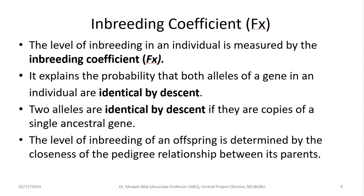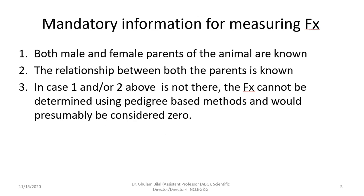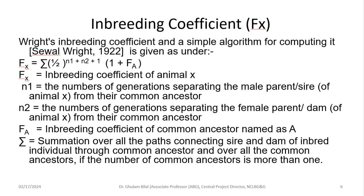If the parents are related, the individual would be inbred; if they are not related, it would be a non-inbred individual. Mandatory information needed for measuring the inbreeding coefficient is that both male and female parents are known and the relationship between both parents is also known. If one or both are not known, inbreeding effects cannot be determined using pedigree-based methods and would presumably be considered zero. This emphasizes the importance of recording pedigrees in animal breeding.